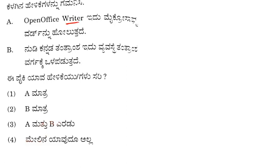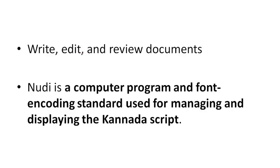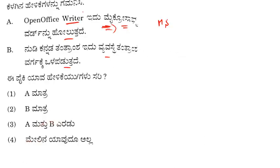Open Office Writer is like Microsoft Word — you can read and edit documents with it. Open Office Writer is part of the open-source alternative to MS Office. Microsoft Word is a professionally used software — a complete package where you can write, edit, and review documents. Microsoft Word and Excel are the right answers here.